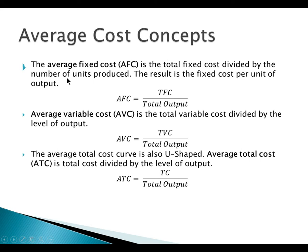Total cost has two portions: fixed cost and variable cost. Average fixed cost is total fixed cost divided by the number of units produced — it gives us the per unit fixed cost. Average variable cost is total variable cost divided by the level of output, giving per unit variable cost. Average total cost is total cost divided by the level of output, and it is a U-shaped curve.